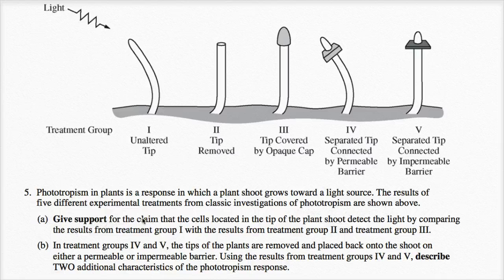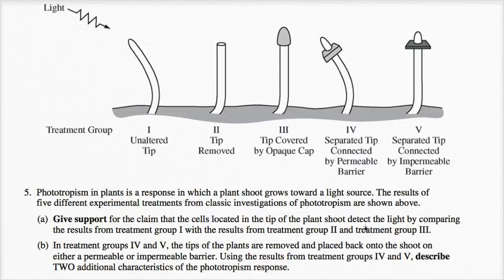Give support for the claim that the cells located in the tip of the plant shoot detect the light, by comparing the results from treatment group one with the results from treatment group two and treatment group three.